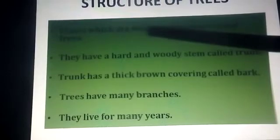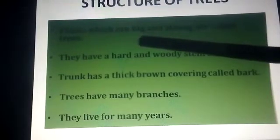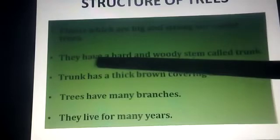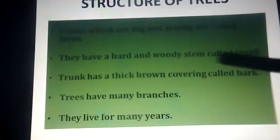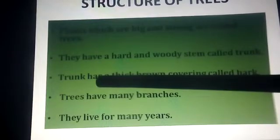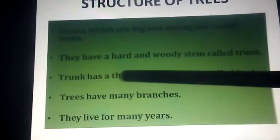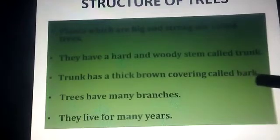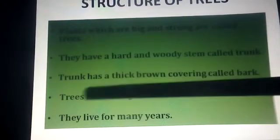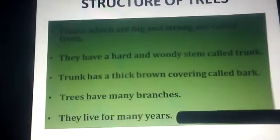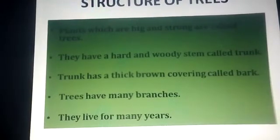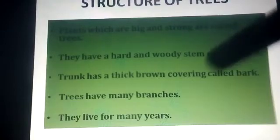Plants which are big and strong are called trees. They have a hard and woody stem called trunk. Trunk has a thick brown covering called bark. Trees have many branches and they live for many years. This is the first type. The second type is shrub.